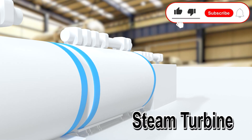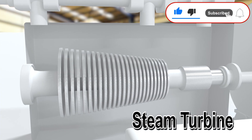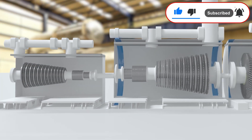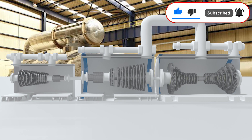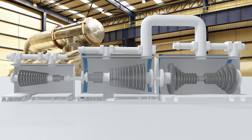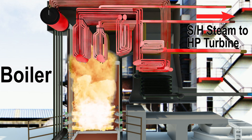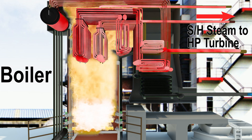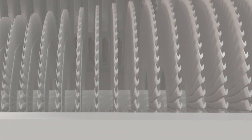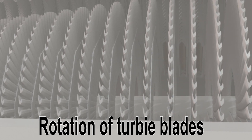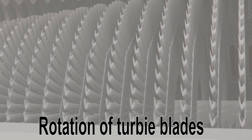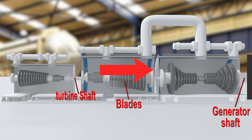This video is about the turbine shaft, which is also called the turbo-generator shaft. A turbine is a mechanical device that converts kinetic and pressure energy of steam into useful work. Superheated steam from the boiler side goes to the turbine, where its kinetic and pressure energy causes rotation of the turbine blades, which in turn rotates the turbine shaft on which the blades are mounted.